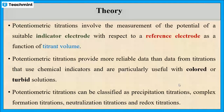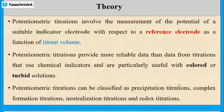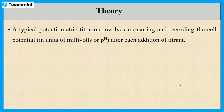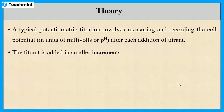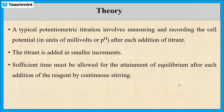This type of titration can be classified as precipitation titrations, complex formation titrations, neutralization titrations, and redox titrations. From the burette, the solution is added in small increments — first 0.5 cm³, then 1 cm³, then 1 cm³, then 1.5 cm³, then 2 cm³, and so on. After each addition, we have to wait for a certain period to measure the potential.